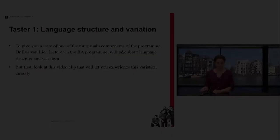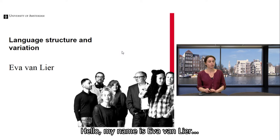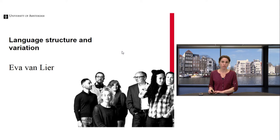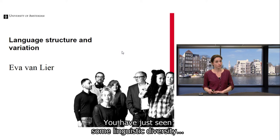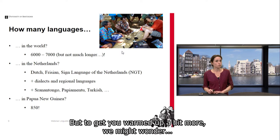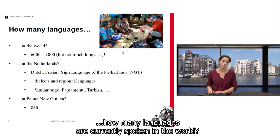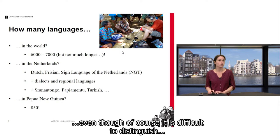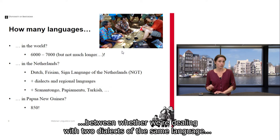My name is Eva van Lier and today I will tell you something about the grammatical structure of languages and about variation in the grammar of languages. You have just seen some linguistic diversity in the form of the native languages of some of our first year BA students. To get you warmed up, we might wonder: how many languages are currently spoken in the world? A rough estimate would be between six and seven thousand, even though it is difficult to distinguish between two dialects of the same language or two distinct languages.